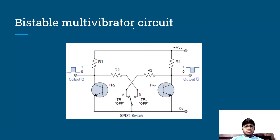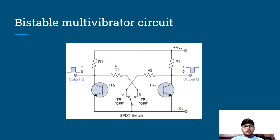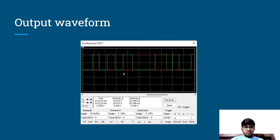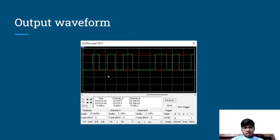This is the bistable multivibrator circuit from a reference on electronics tutorials which I have used. This is the image of the circuit I made in Multisim. This is my output waveform. Now let's understand the working of the bistable multivibrator.